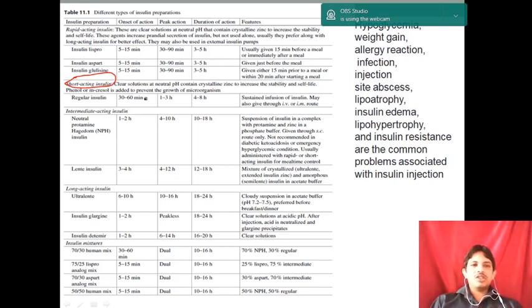Under this, regular insulin has an onset of action of 30 minutes to 1 hour, peak action of 1 to 3 hours, and total duration of action of 4 to 8 hours. Sustained infusion of insulin may be given by IV and IM route also, though mostly it is given by subcutaneous route.